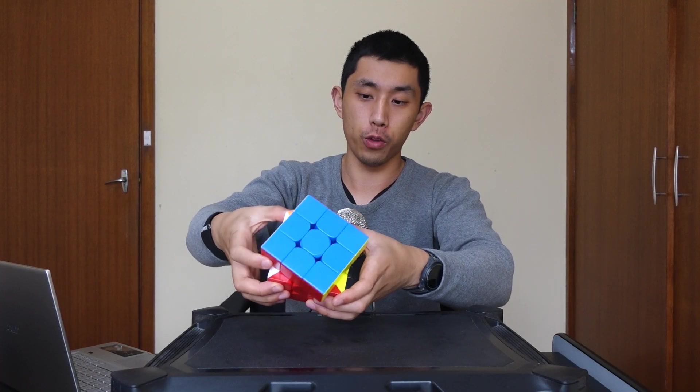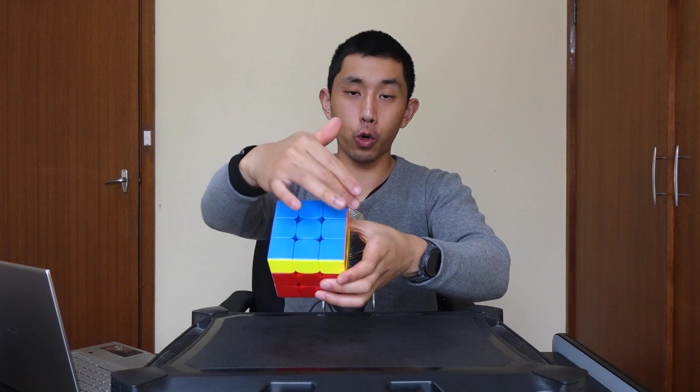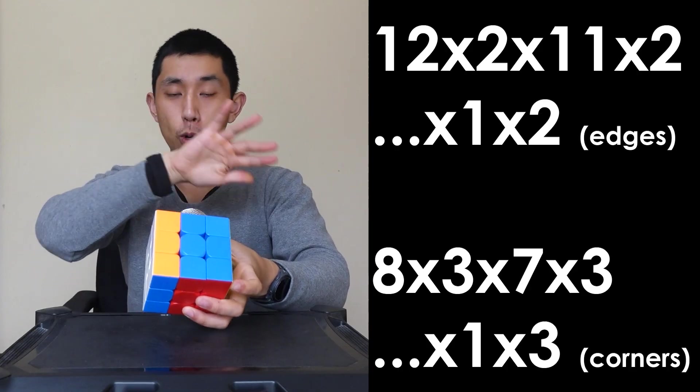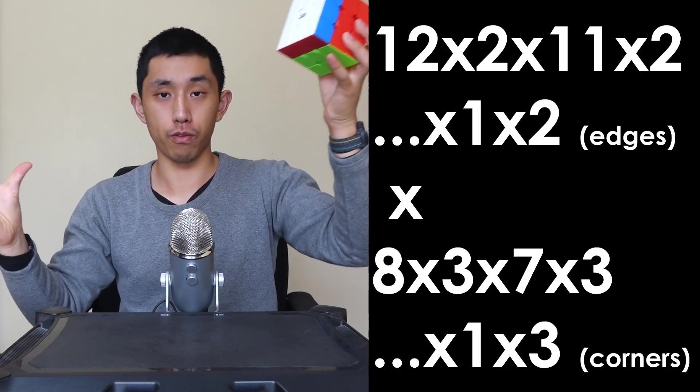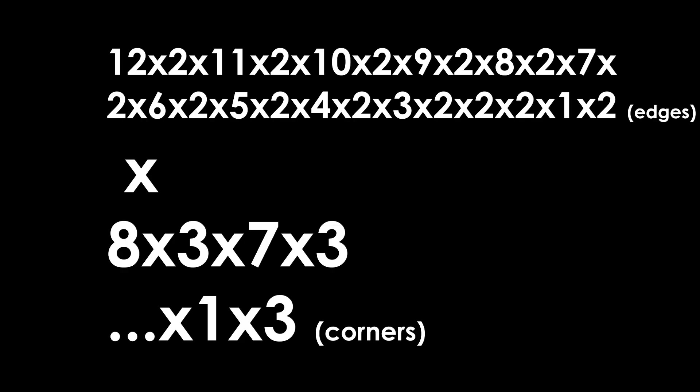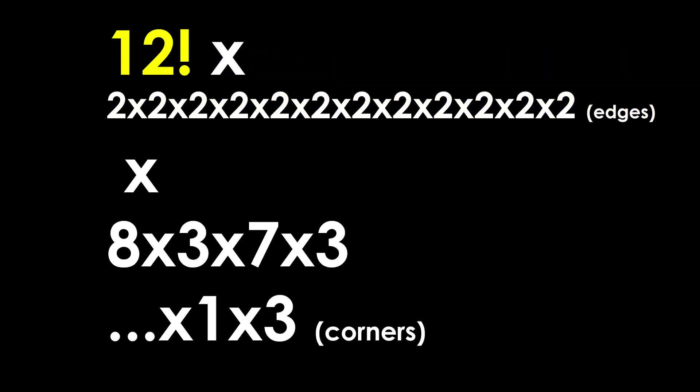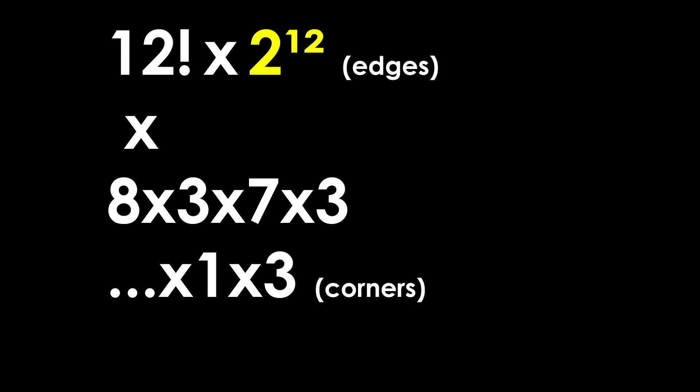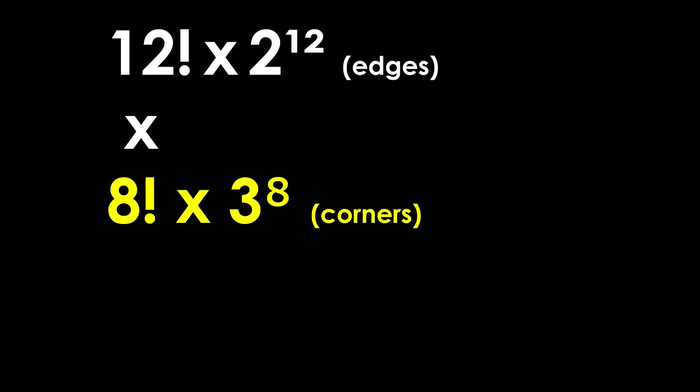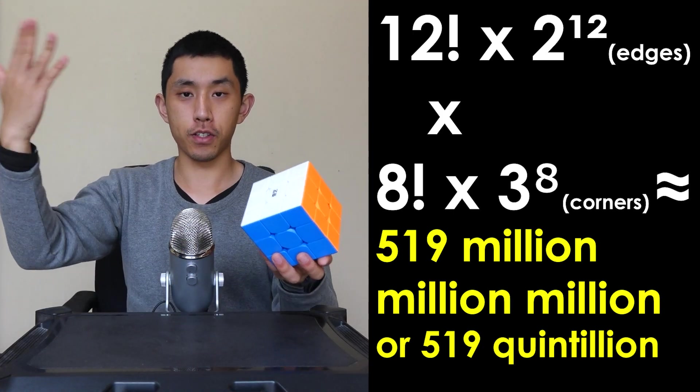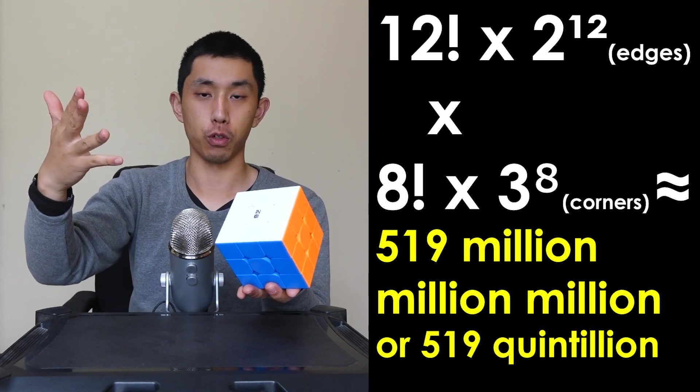Note how when I turn the cube like this, the corners and edges don't interact ever. So I can just multiply both groups of numbers together. Since the order doesn't matter, we can shuffle the numbers around for the edge combinations, which can be rewritten as 12 factorial, and 2 multiplied by itself 12 times can be rewritten as 2 to the power of 12. We can apply the same logic for corners. But as you can see, the answer to this isn't 43 quintillion like I mentioned before.